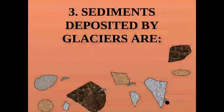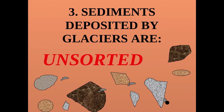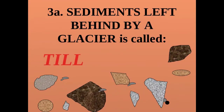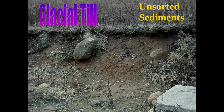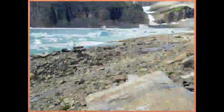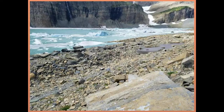Sediments deposited when a glacier melts are called glacial till — unsorted sediments. This is item 3a in your notes. If you see unsorted sediments in an area — boulders, cobbles, sand, silt, clay all mixed together in different shapes and sizes — you can say it was probably deposited by a glacier.